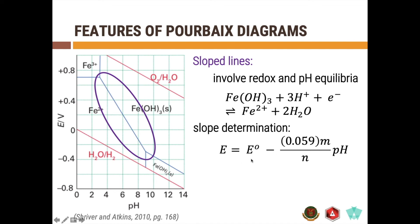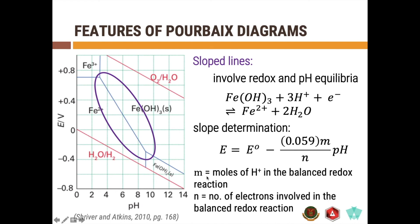You have E equals E0, which is the standard reduction potential, minus 0.059 M over N times the pH, where M is the number of moles of H+ in the balanced redox reaction, and N is the number of electrons involved in the balanced redox reaction. If we're going to look at this ferric hydroxide to Fe2+ conversion, then the value of M here should be 3, and the value of N should be 1. In this course, you will not be asked to construct a Pourbaix diagram, but it's important for you to know how to get the slope of these lines.